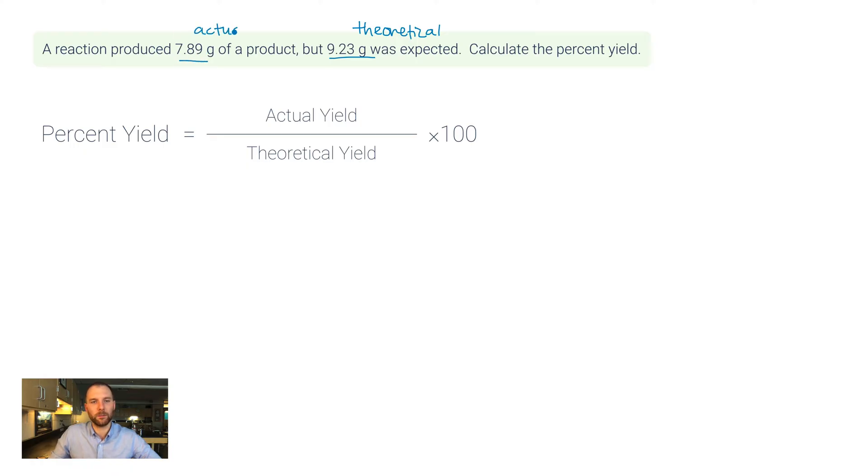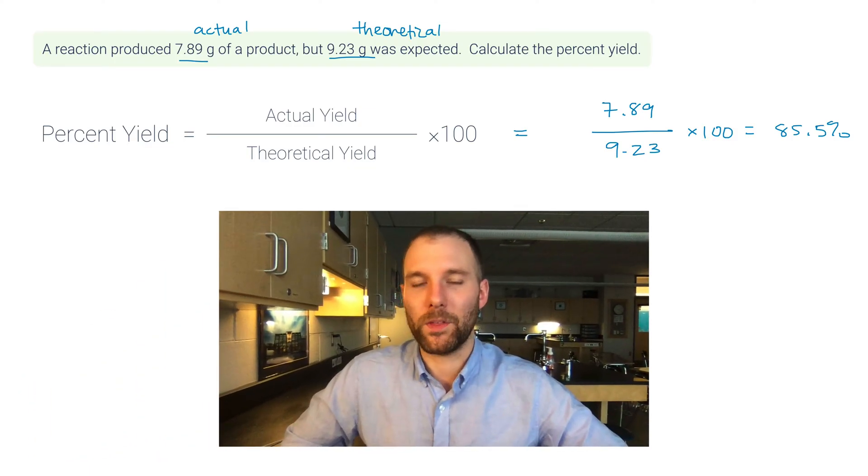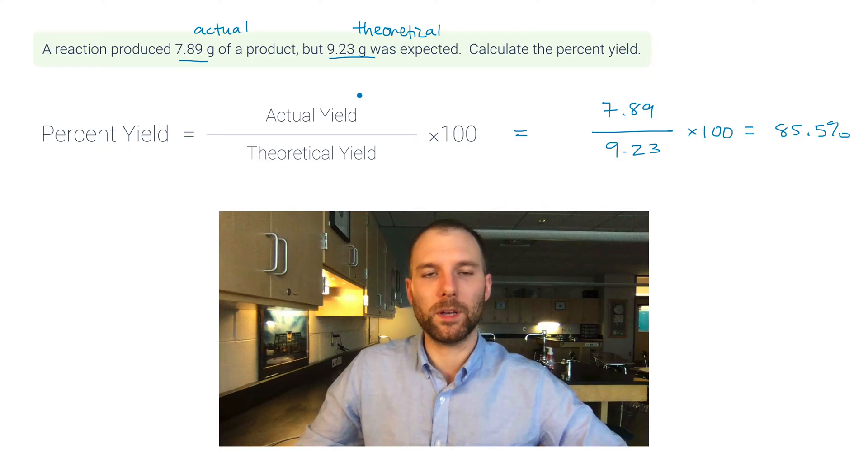This here is the theoretical yield, so that means this goes on the bottom of our fraction. And then this is the actual yield because that's what was actually produced. It says calculate the percent yield. Well, this is no big deal—it's just plugging in what we know. 7.89 divided by 9.23 and then multiply by 100. Got my trusty calculator right over here: 7.89 divided by 9.23 times 100 will give me 85.5 percent. Let's talk about sig figs: you don't want to use 100 for sig figs—it's not a measurement. So you really just want to match the significant figures of the measurements that you're using in the percent yield calculation.